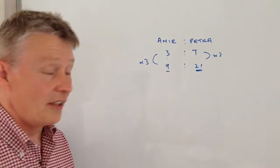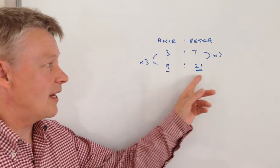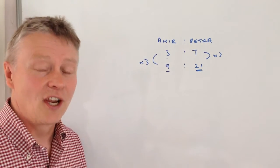So actually, in this particular problem, Petra is 21 years of age.